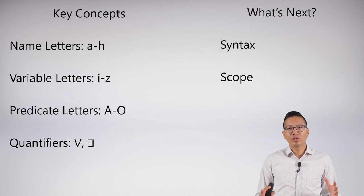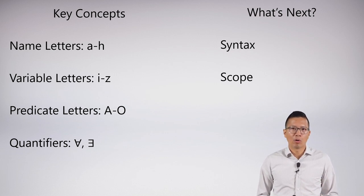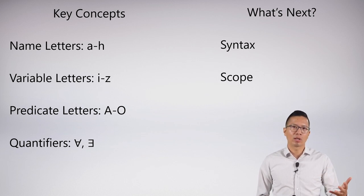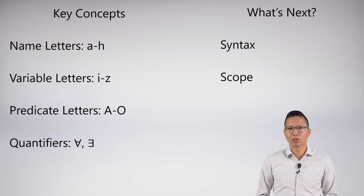Just to recap, this video was really just a soft introduction to the core things that we need to add to our system to do predicate logic in a single place. We need name letters, variable letters, predicate letters, and we need quantifiers. So what we're missing is a really better understanding of these things. And that we'll start covering in very technical detail in our next video where we go over the syntax and we go over a really important concept called scope.